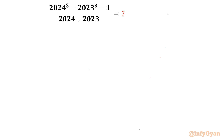The first problem is: (2024³ − 2023³ − 1) / (2024 × 2023). If you are thinking that the a³ − b³ identity will solve this directly, go ahead and check — it is not going to solve easily that way.